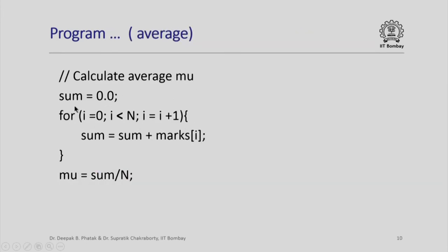We now calculate mu. So we start with sum equal to 0, again iterate over all the elements of the marks array, keep adding every element to sum. And finally, when we finish the loop, we divide sum by n to get the mu.